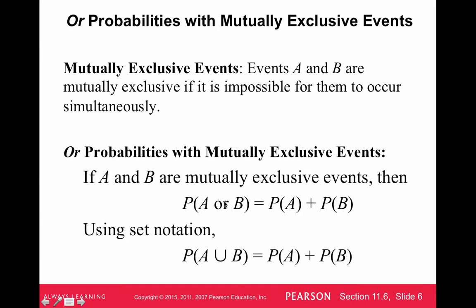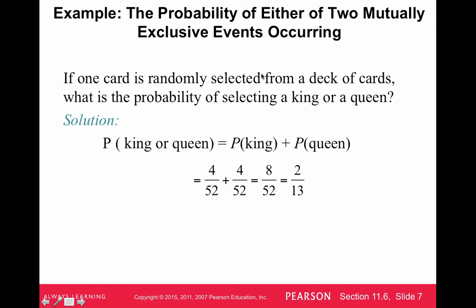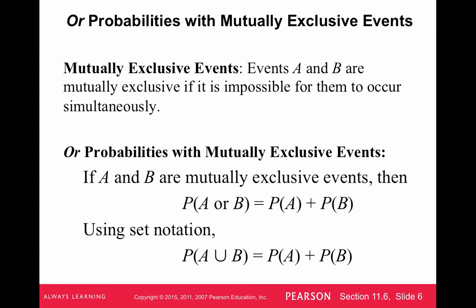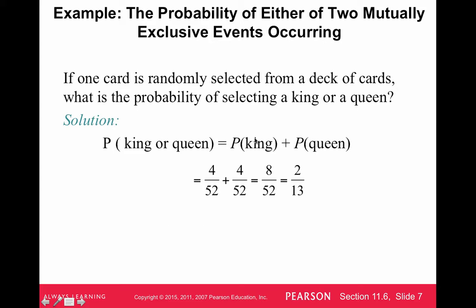So OR probabilities with mutually exclusive events. If A and B are mutually exclusive, then the probability of A or B, we just add the sum or we sum up their probabilities, the probability of A plus the probability of B. Let's say we're going to randomly select a card from a deck of cards. You win the game if a king or a queen comes. You want to know the probability that you're going to win the game. A king and a queen cannot occur at the same selection, so we can't get a king and a queen, but we can win the game if we get a king or a queen.